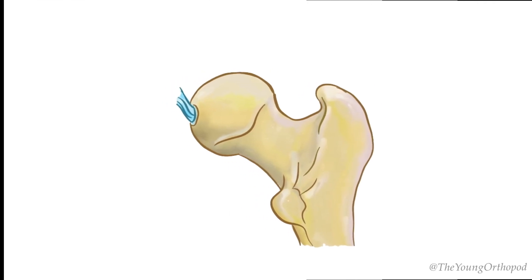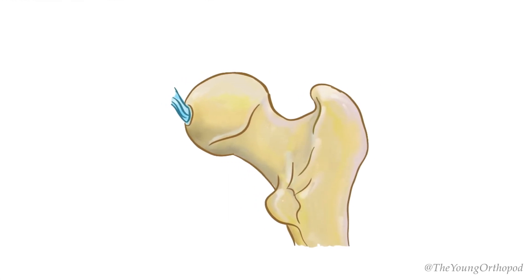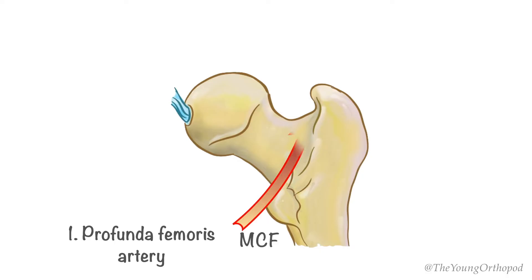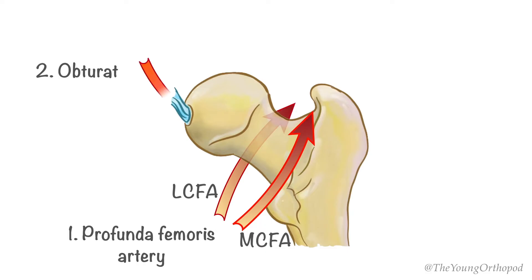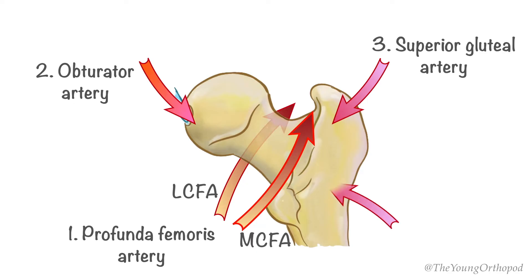The femoral head derives its blood supply usually from four arteries: the profunda femoris artery via its medial circumflex and lateral circumflex branches, the obturator artery, and occasionally the superior and inferior gluteal arteries.